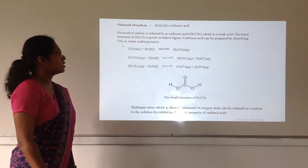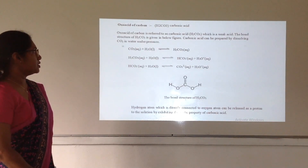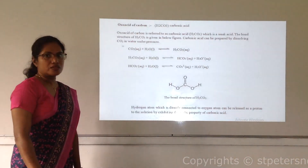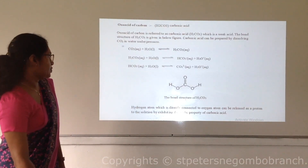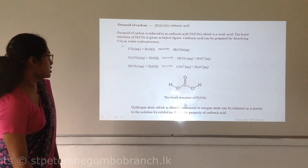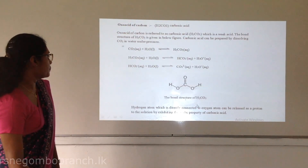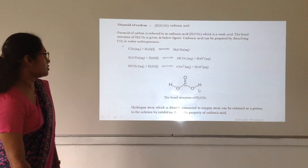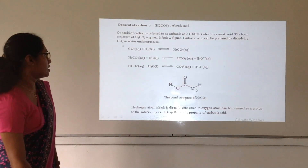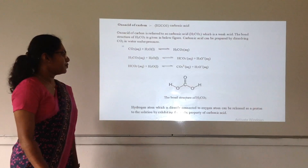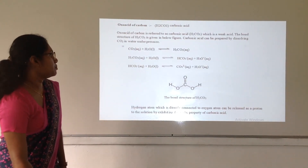Now we have to talk about carbonic acid. Carbonic acid can be produced by dissolving carbon dioxide in water under pressure. When we consider the bond structure of carbonic acid, the two hydrogen atoms that are directly connected to oxygen can be released as protons. That is why carbonic acid is a diprotic acid.